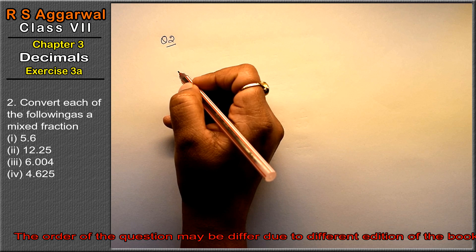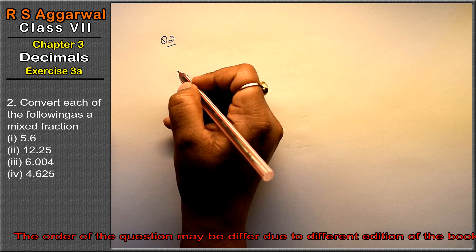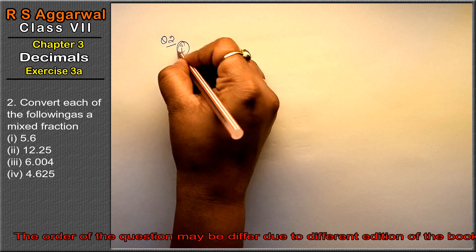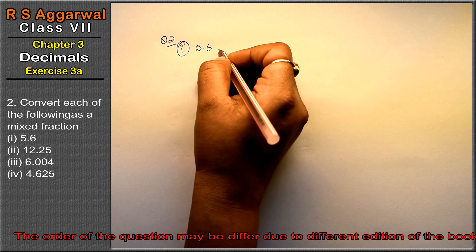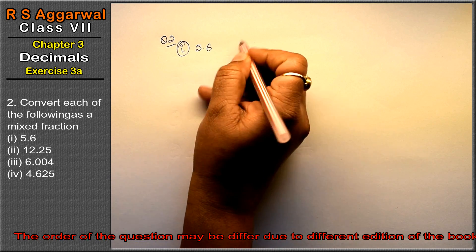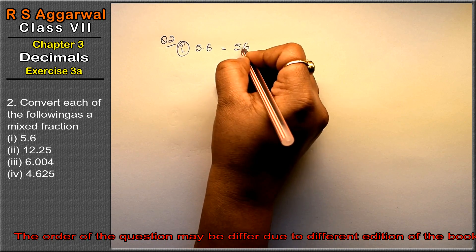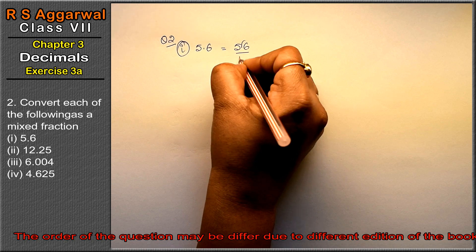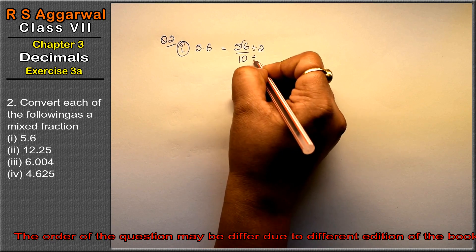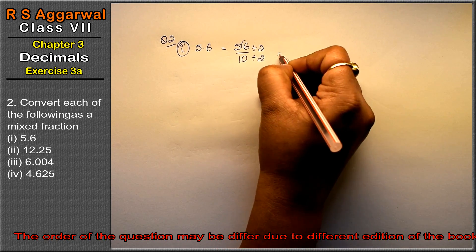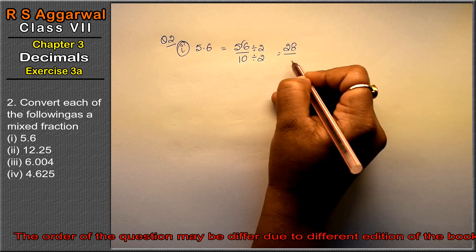Question number 2 is: convert each of the following as a mixed fraction. We have to change it into a mixed fraction. First part is 5.6. There are two methods. First, we write 5.6 as 56 over 10. Now divide by a common number, like 2: 2 times 2 is 4, 2 times 8 is 16, so we get 28 over 5.